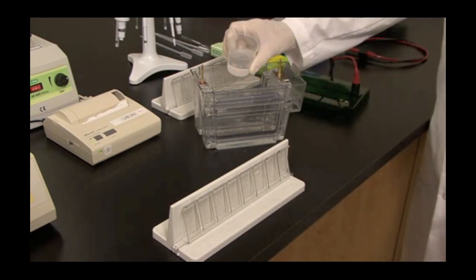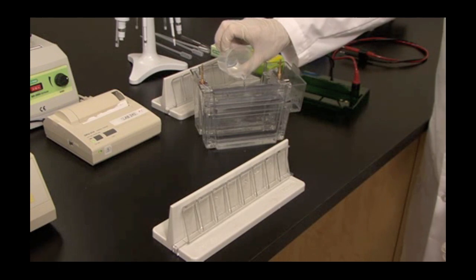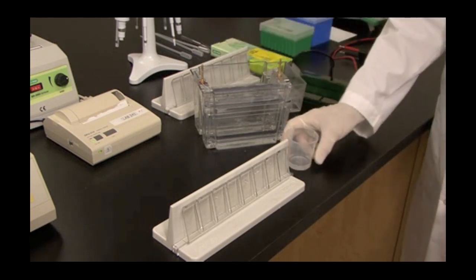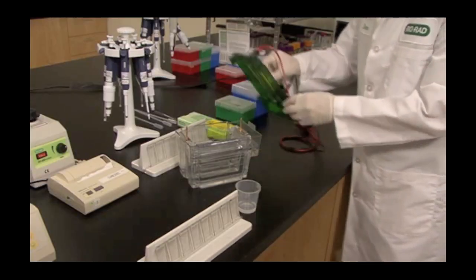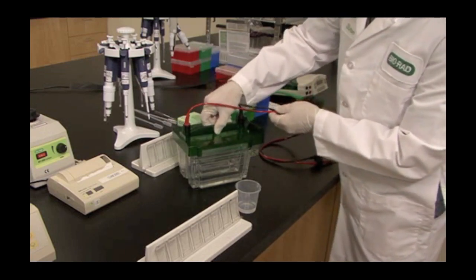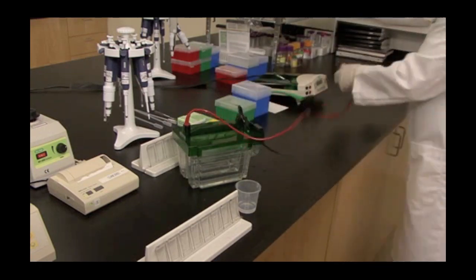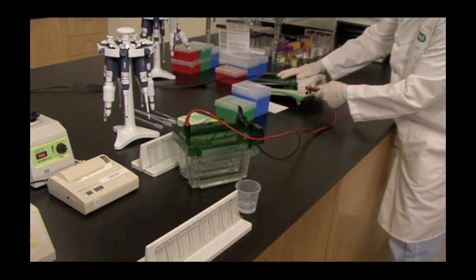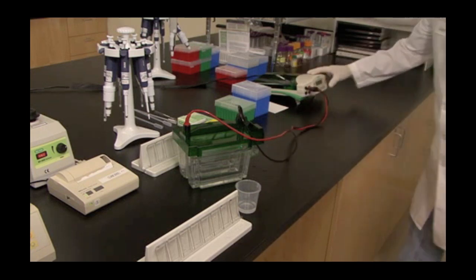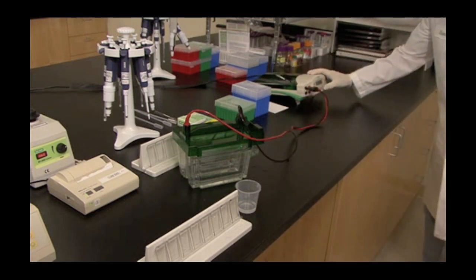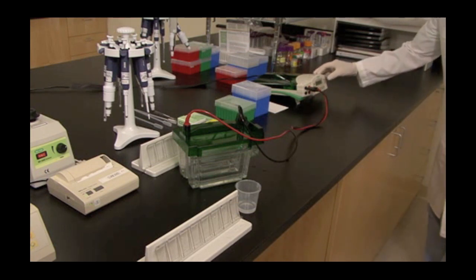Load the upper buffer chamber with running buffer. Place the lid onto the Criterion cell. Insert the leads into your PowerPak power supply. Program for 200 volts for one hour. Constant voltage. And start.